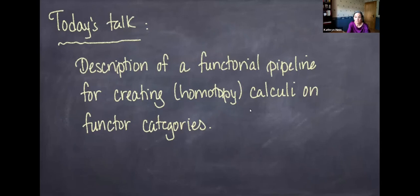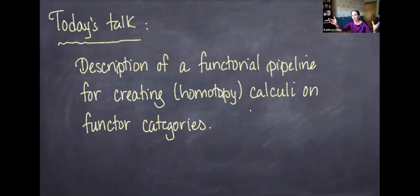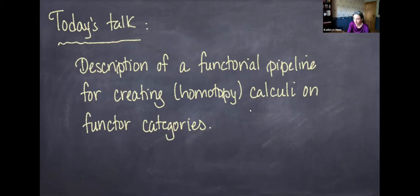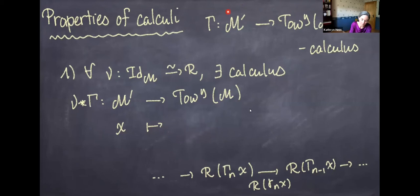The point of today's talk is to describe a functorial pipeline for creating such calculi on functor categories. You take some specific kind of input and know how to create a new calculus. It also gives a way of comparing such calculi because everything is very functorial — if two different inputs are connected by some morphism, that gives a natural transformation between the calculi. So it's a framework that makes it easier to compare different calculi.